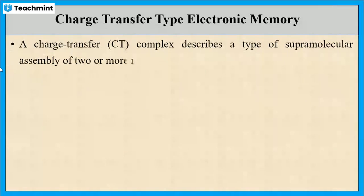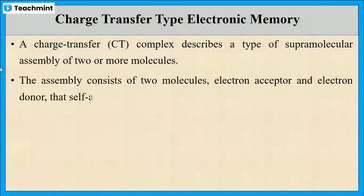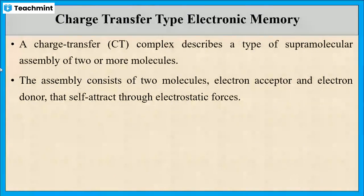The fourth type is charge transfer type electronic memory. A charge transfer complex is a supra-molecular assembly of two or more molecules. This assembly consists of two types of molecules: electron acceptor and electron donor. These two types are self-attracted through electrostatic forces.